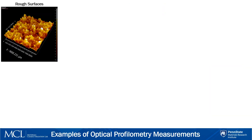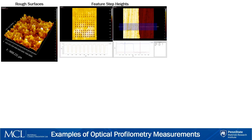Here we'll look at some example measurements taken via optical profilometry. You may remember this image from the beginning of the video — it's a large-scale topography map of a rough titanium surface. Notice the size of the image is 9x9mm; this image has been stitched together using a 4x4 array of single images. We also see step height profiles taken from both a periodic array of steps on the left and a single step on the right.